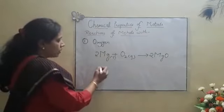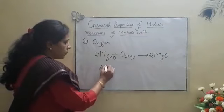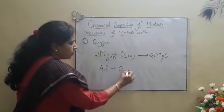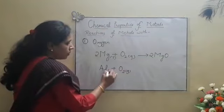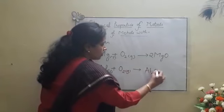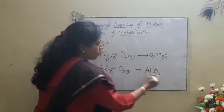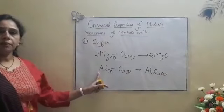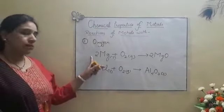After this, we have metal aluminium. Aluminium also will react with oxygen and it will burn to form aluminium oxide. Formula will be Al2O3. This reaction happens less readily than magnesium.